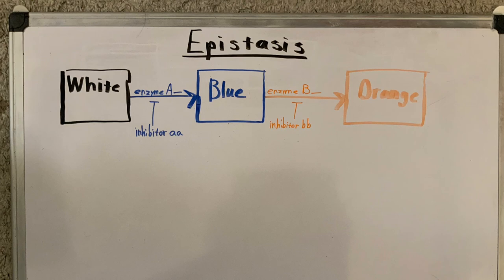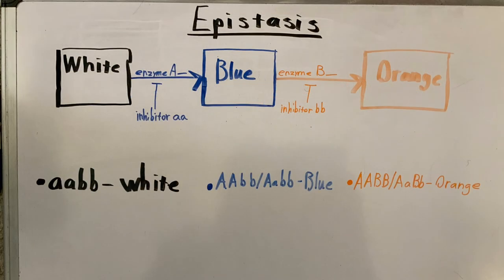Epistasis occurs when the expression of alleles at one locus masks or modifies the expression of other alleles at another locus.